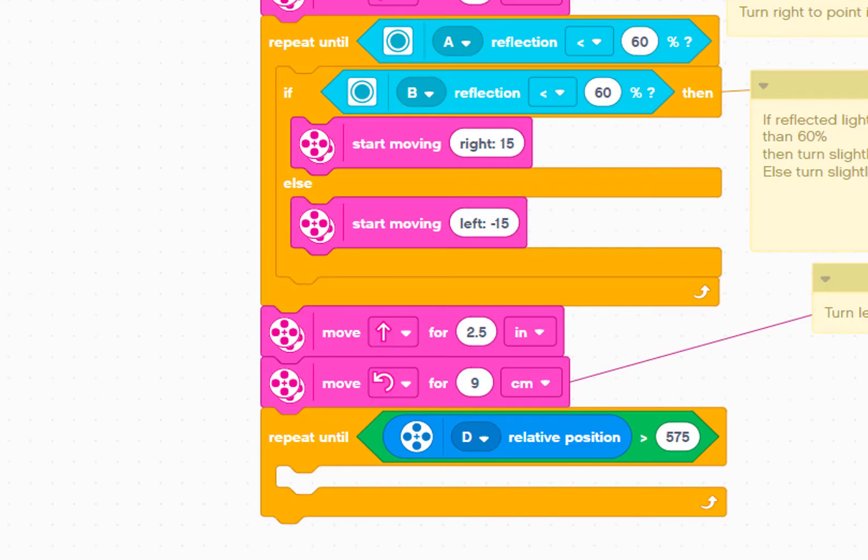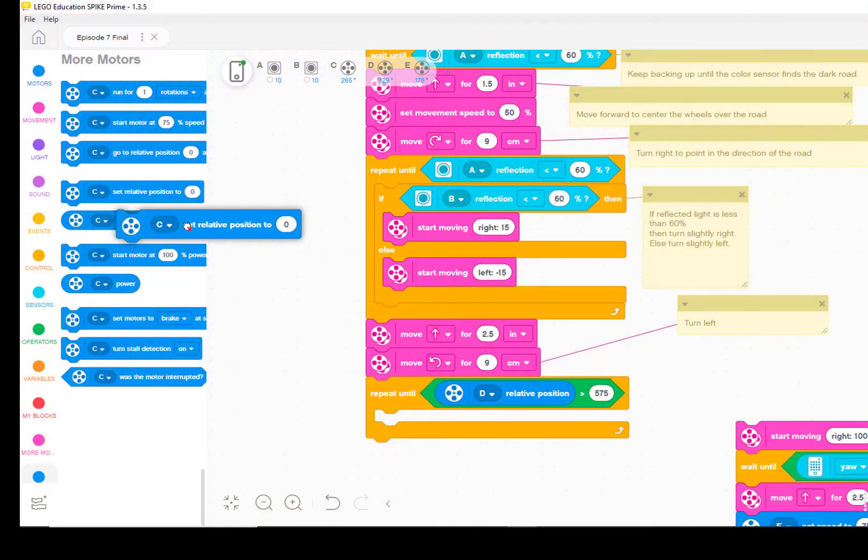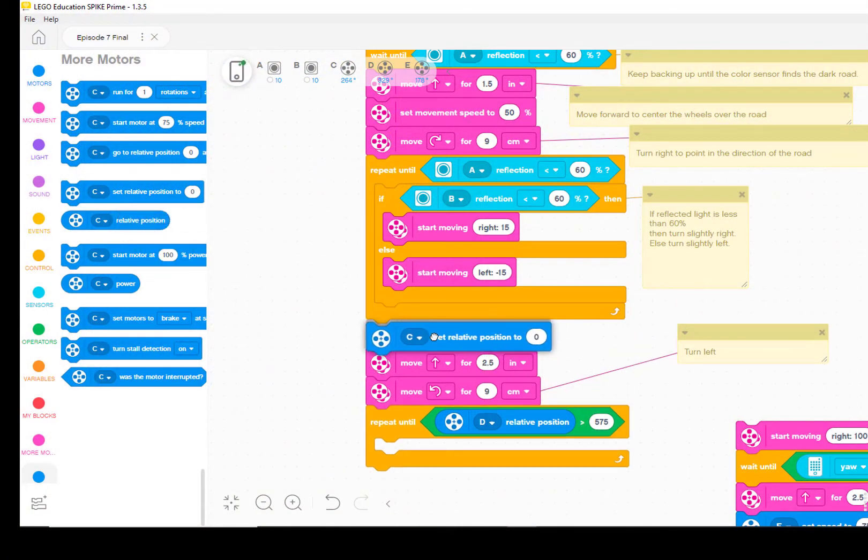Remember that we're using relative position. So we need the relative position to start at zero before the repeat until. Fortunately, there's a block that will do that for us. Let's place it just before where the program starts the repeat until.